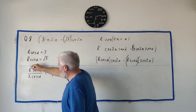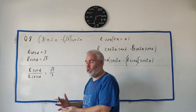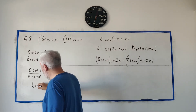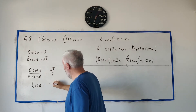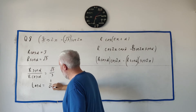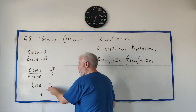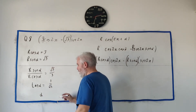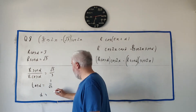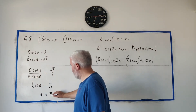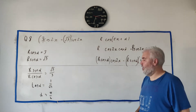The r's cancel, and sine(α) over cosine(α) becomes tangent(α), which equals 1 over √3. Taking the inverse tangent of both sides, the inverse tangent of 1/√3 is π/6. So α = π/6 — that's half the answer.